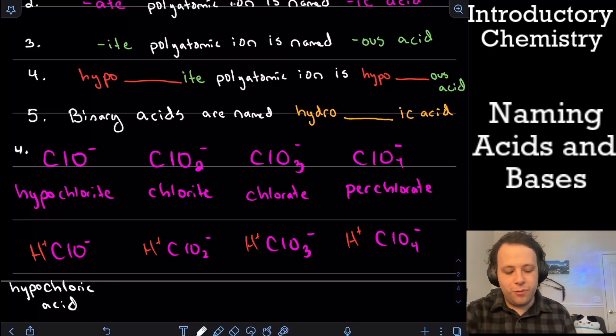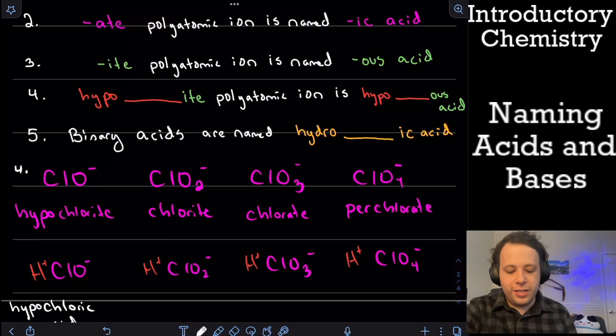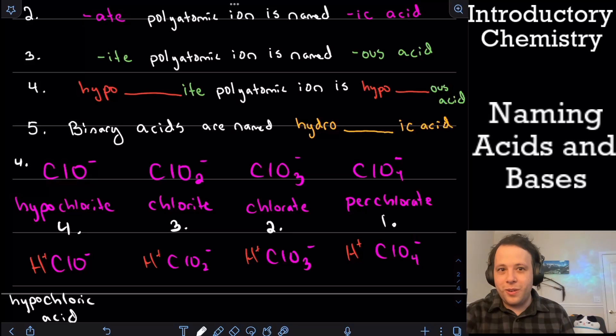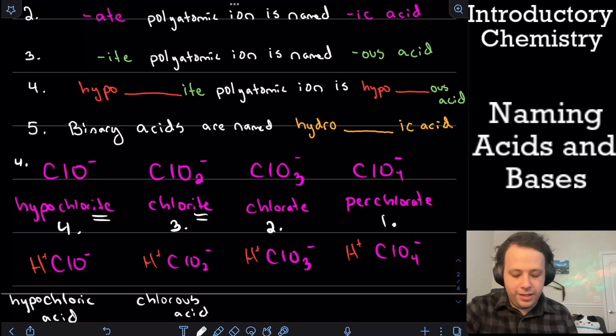Right? So using rule number four, then a chlorite, which is going to be using rule number three. Kind of going a little backwards here. With all of these. So three, what we're going to be doing is chlorite, that's going to become chlorous acid. So it's going to become chlorous acid because we're dropping the ite ending. And we're keeping hypo for that first one. So this is getting dropped, that's getting dropped. We're keeping this.